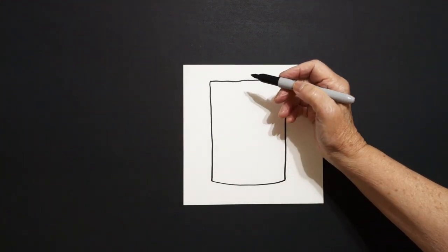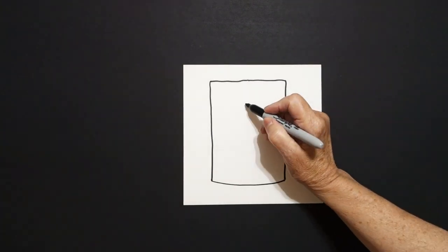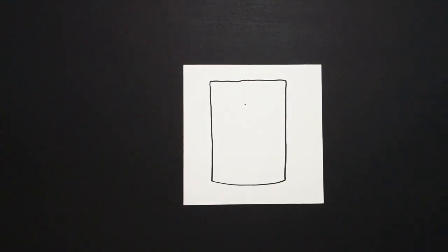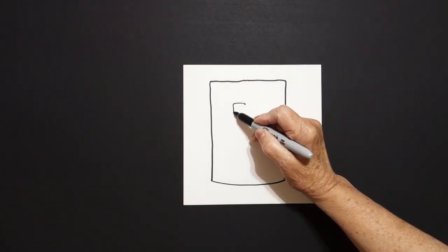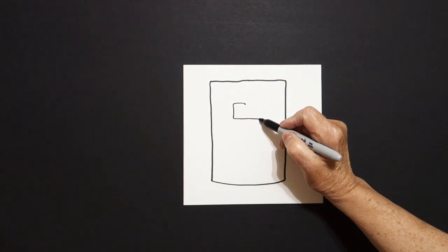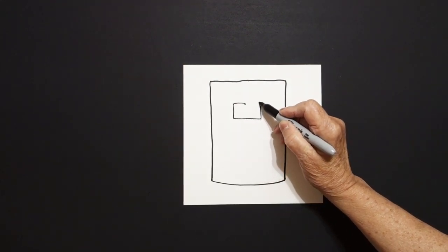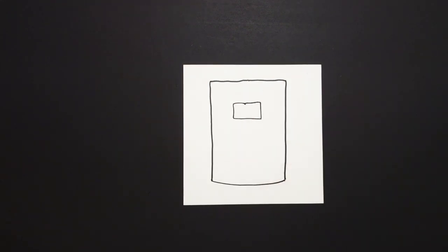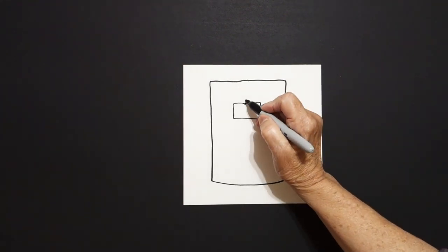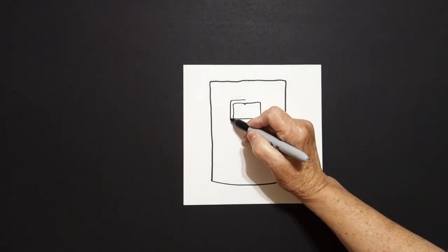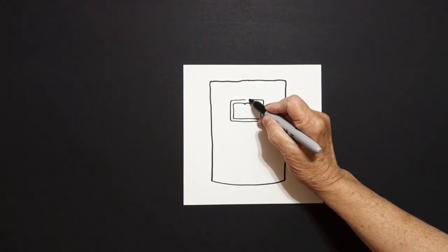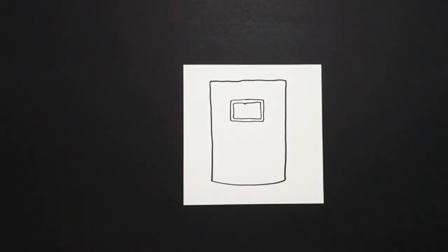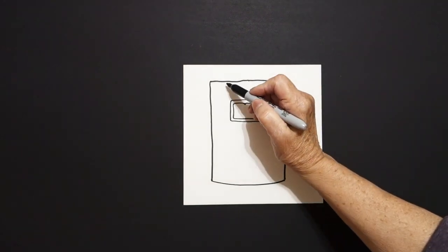Now, right about here I'm going to put a dot, and from that dot I'm going to draw a baby rectangle. Straight line, straight line, straight line, connect. Now I'm going to draw another rectangle, straight line, straight line, straight line, connect right next to it.